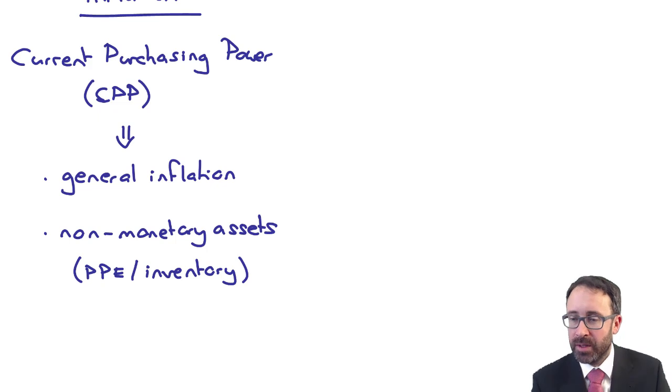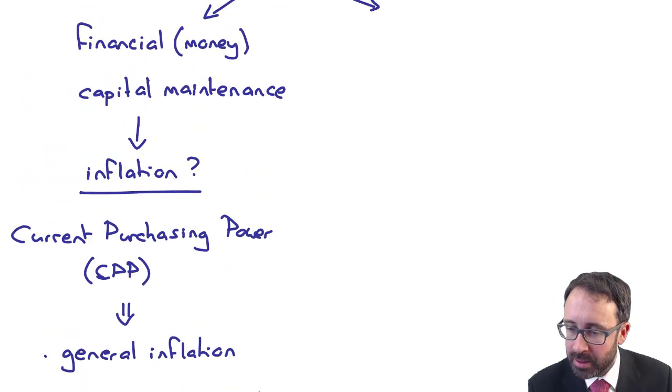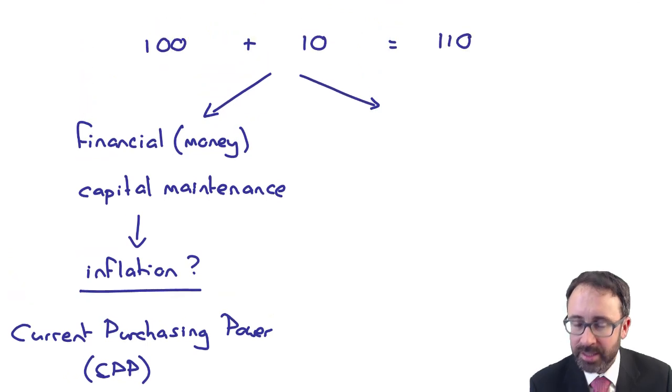So here with your Current Purchasing Power, if there is inflation present—and effectively this financial money capital maintenance is what all businesses adopt, but they just ignore the effects of inflation because the effects of inflation are immaterial, and therefore if it is immaterial it is not relevant to the users of the accounts. And let's face it, it's going to get complicated, so why complicate it any further? Doesn't make sense does it?